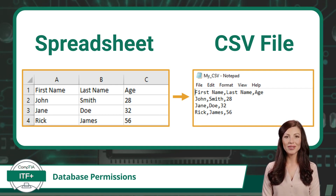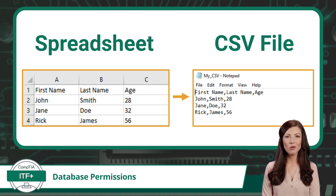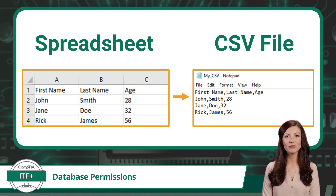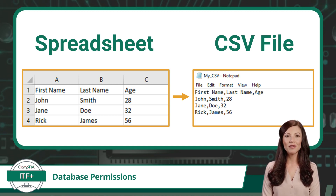So how does a CSV file work? CSV files are organized in a tabular structure, similar to a spreadsheet. Data is divided into rows and columns. Each row represents a single record or entry, and each column represents a field or attribute of that record.